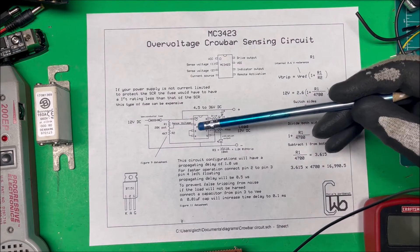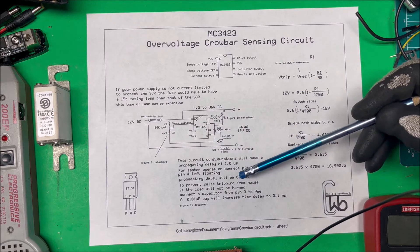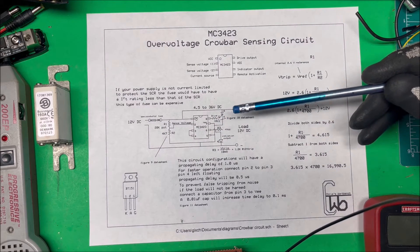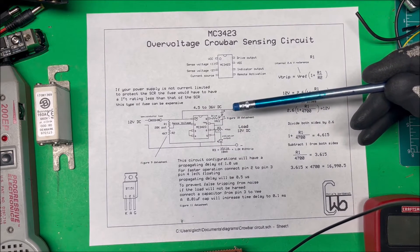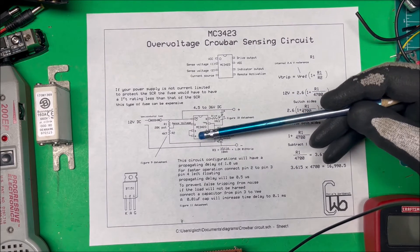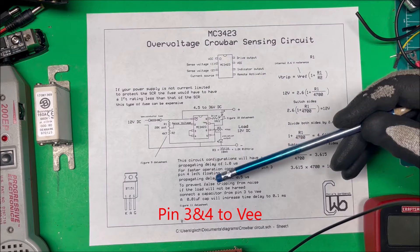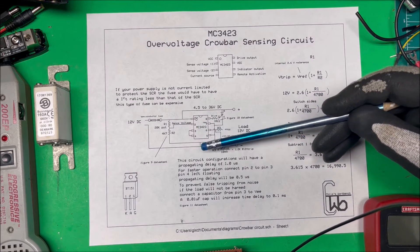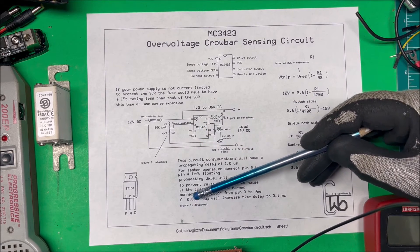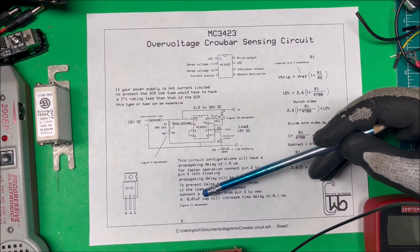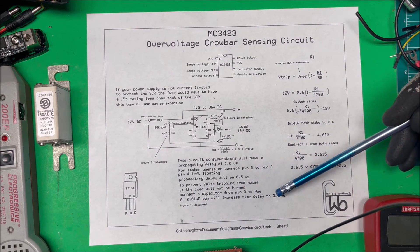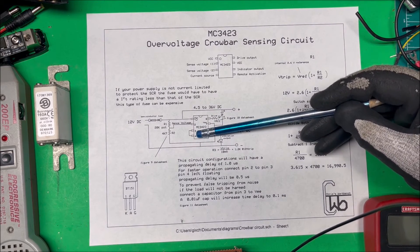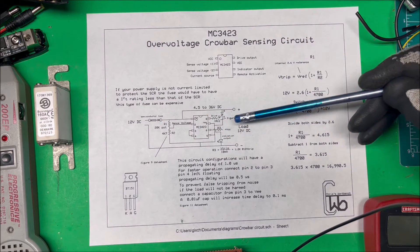If you want it faster than that, you can connect pin 2 to 3 and leave 4 floating, and you'll get 0.5 microseconds. If you have some fault tripping due to noise and your load can handle a little bit extra voltage, you can take pin 3 through a capacitor to ground. Figure 11 in the datasheet shows you what kind of capacitor to use. You can increase the time delay—a 0.01 microfarad cap will increase it. You can adjust the time delay if you want, but we're keeping it to our 1 microsecond time delay here. We'll give it a try.